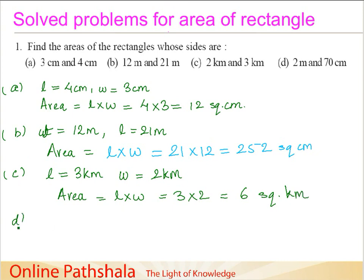For problem D, the length L, which is the longer one, is 2 meters, and the width W is 70 centimeter. Now, we know that 1 meter equals 100 centimeter. Therefore, 2 meters is going to be 200 centimeters. This is so that we have both the quantities in same units.